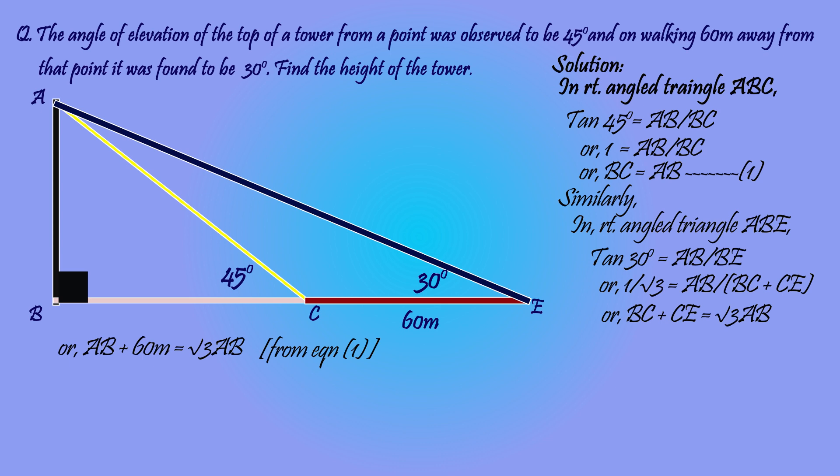Or root 3 AB minus AB equals 60 meters. As we need to find AB, the terms with AB are kept together. As AB is common on both terms, AB times root 3 minus 1 equals 60 meters, or AB equals 60 divided by root 3 minus 1.